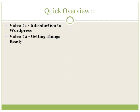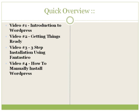Videos three and four are both about installation and are provided as options. In video number three, we'll cover a three-step installation using Fantastico, which is a product usually attached to cPanel hosting that most web hosting companies provide. If you don't have that and want to install WordPress manually, video number four covers that. If you succeed with video three, you can skip video four.